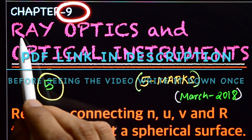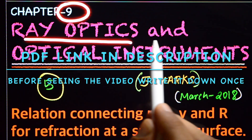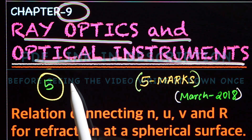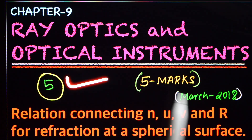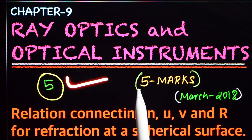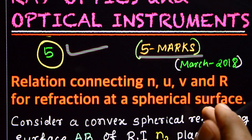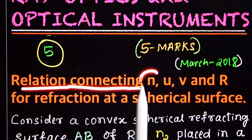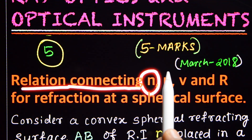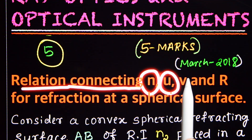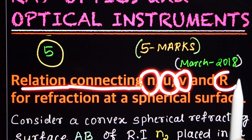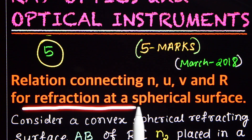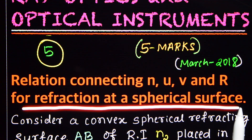Chapter 9: Ray Optics and Optical Instruments. This is the 5th topic, worth 5 marks. It covers the relation connecting N, U, V, and R for refraction at a spherical surface.